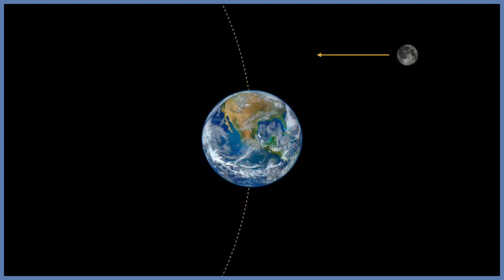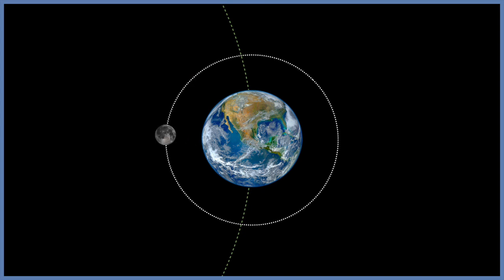Under the capture theory, a rocky body formed elsewhere in the solar system could have been drawn into orbit around the Earth. This theory has a lot of weight to it, because not only would the early solar system have a lot of bodies in it, the Earth is the largest planet in the inner solar system, so therefore it has the largest gravitational field.